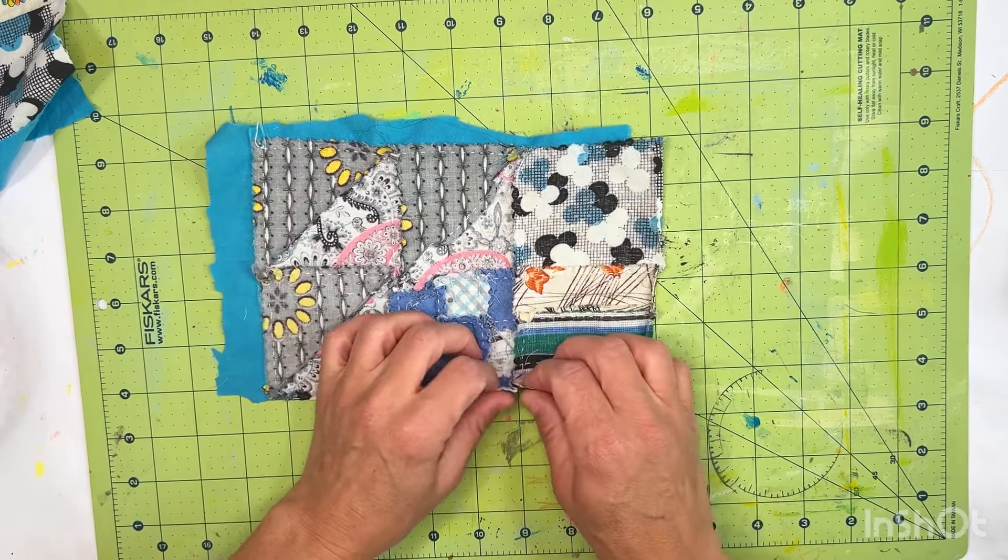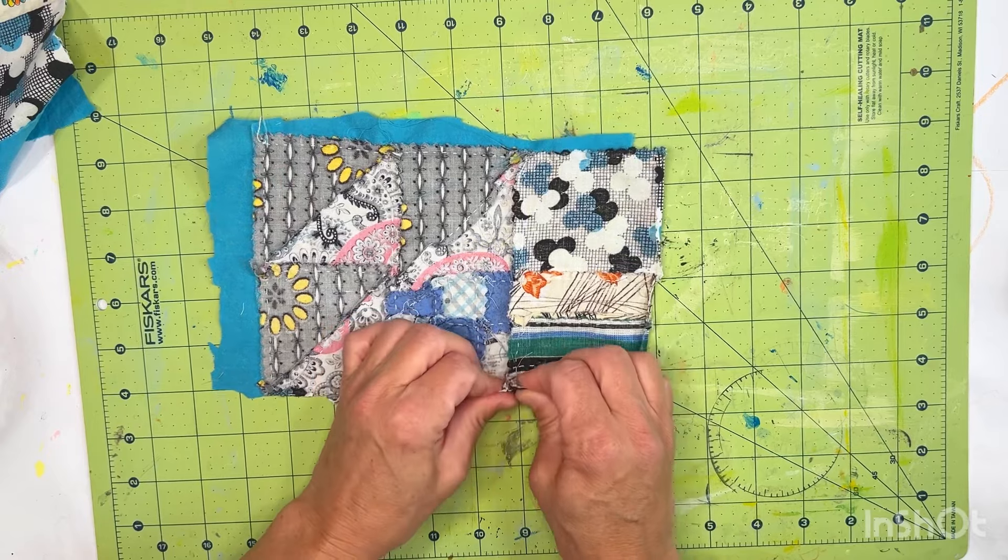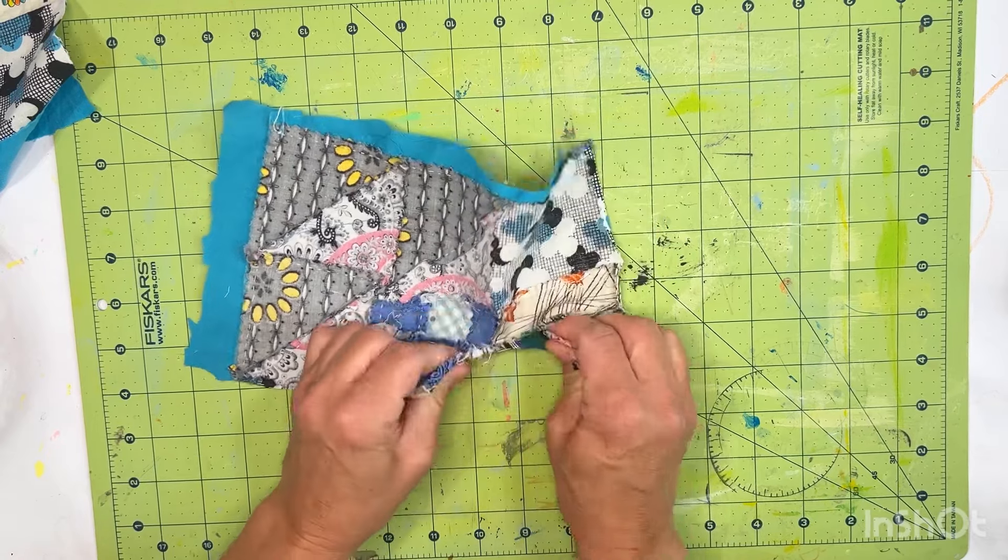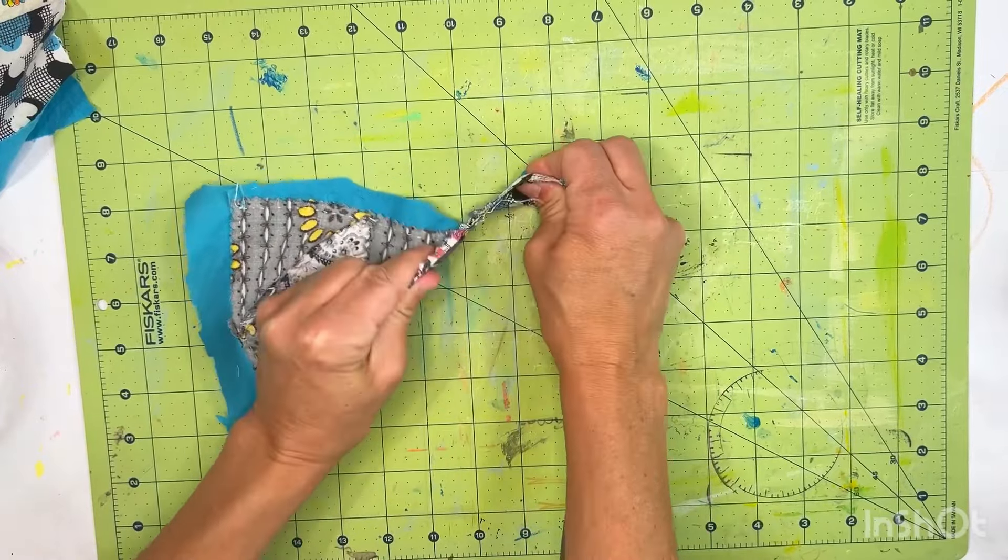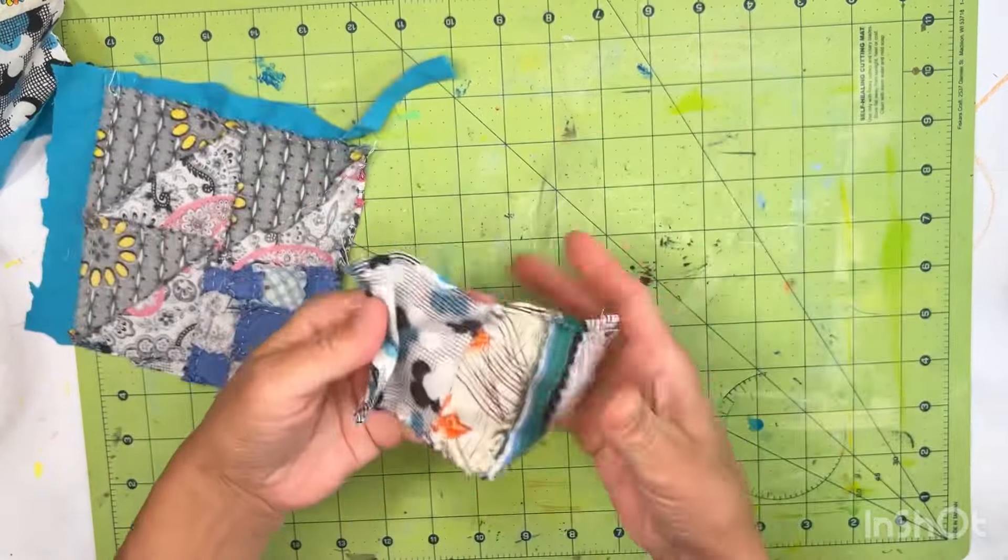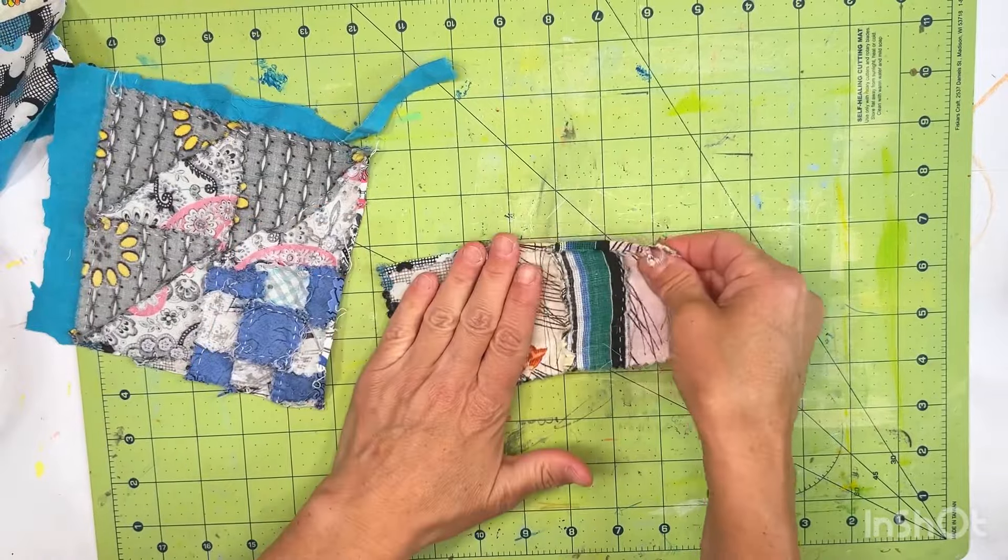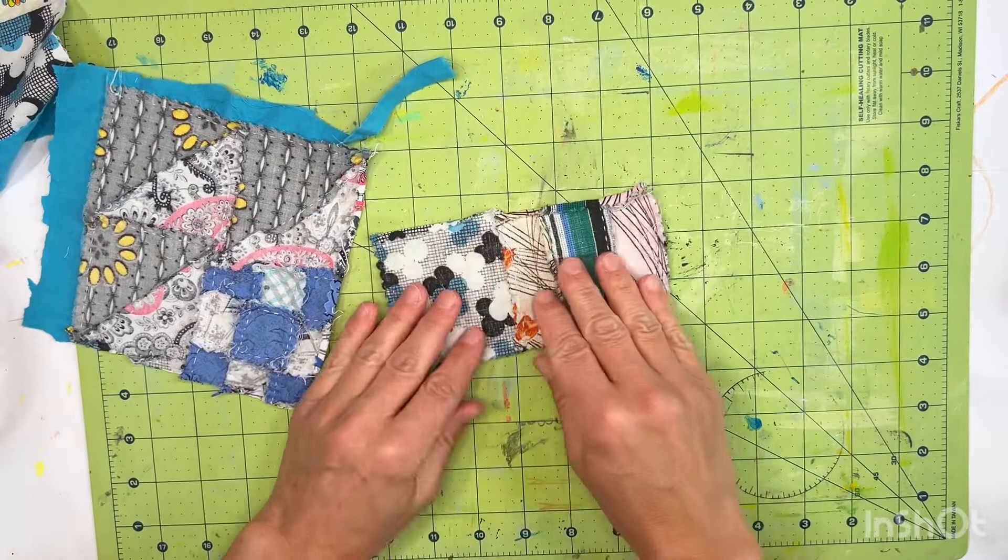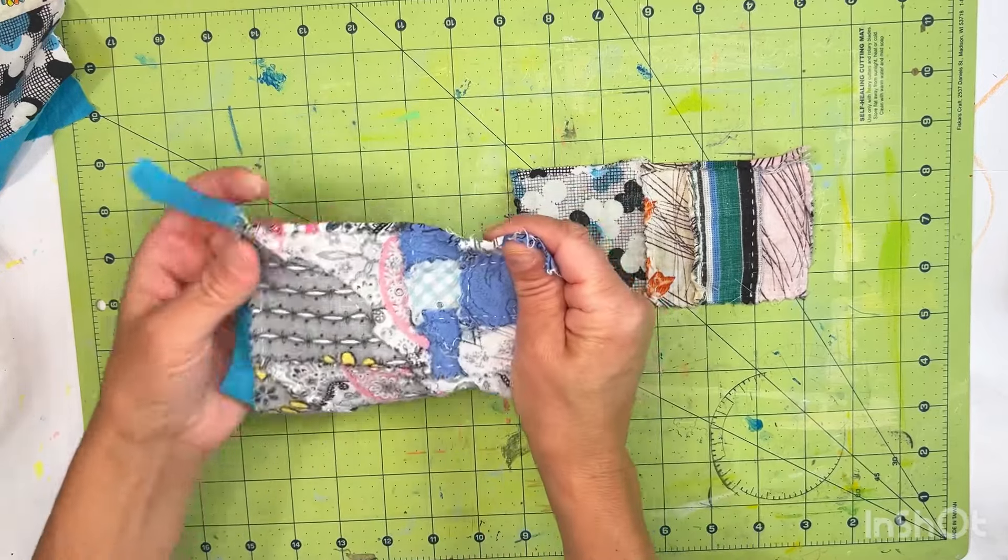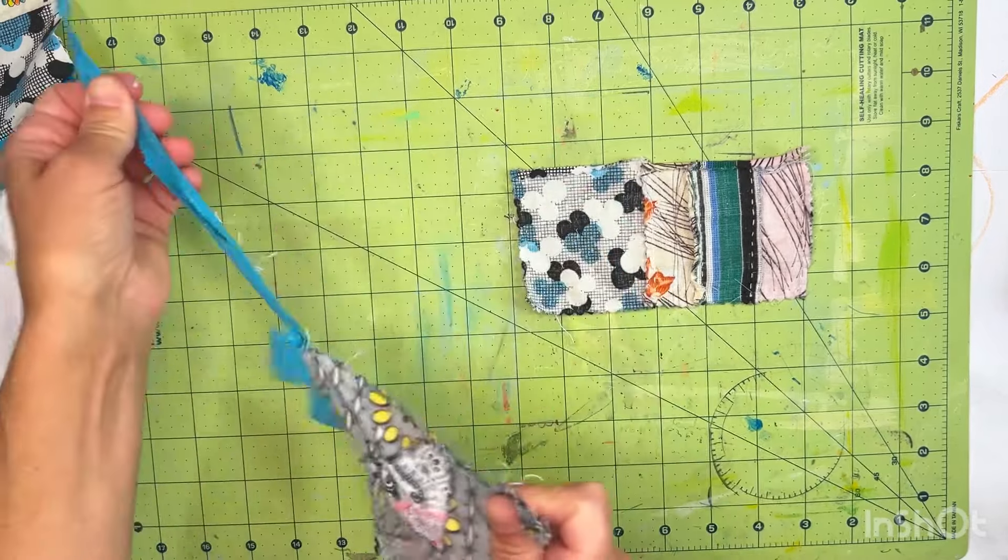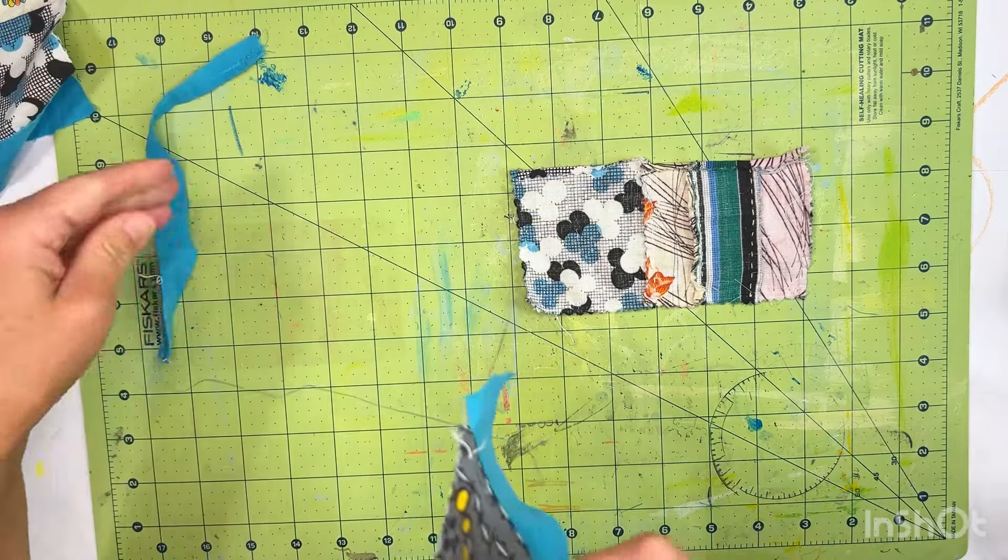So I like to use just my hands and kind of tear it apart. Now if you have an old quilt it's probably going to take a little time and patience. This quilt the fabric does not seem to be too degraded so it's really easy to pull these apart.